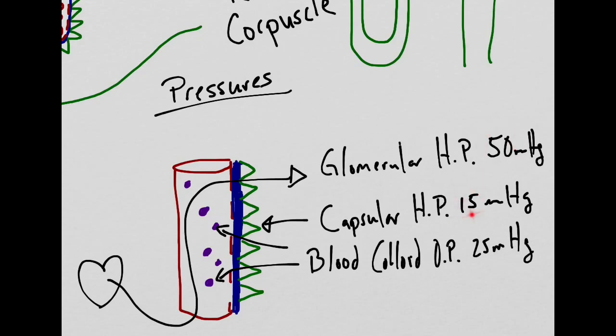The net result of all of these pressures is 10 millimeters of mercury of filtration pressure moving through the triple filter. And once again, this is called net filtration pressure.